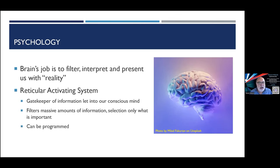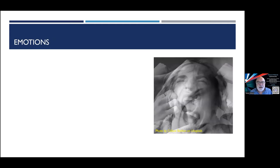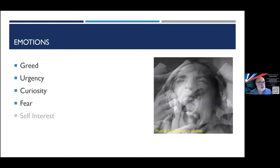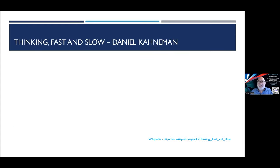For example, if you want to buy an Audi, all of a sudden you see Audis everywhere. Our emotions get involved too, and marketeers exploit these: greed — 'I must have it'; urgency — 'I must have it now'; curiosity — 'What is this?'; fear — 'I'm missing out'; and self-interest — 'I'll have it so somebody else can't.' But there's also helpfulness, which we'll come back to.